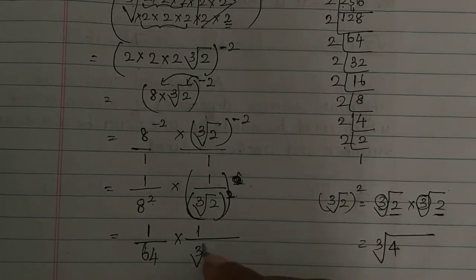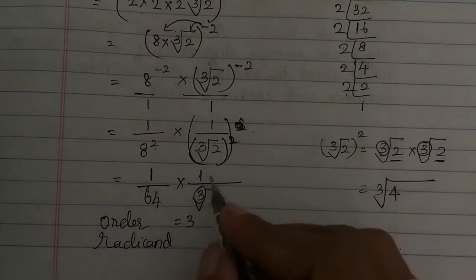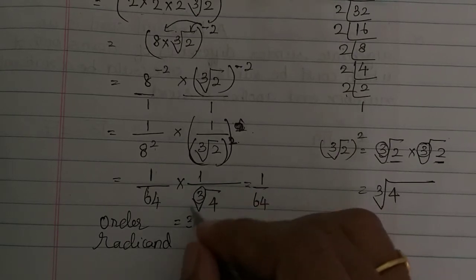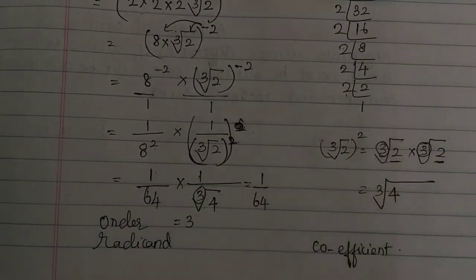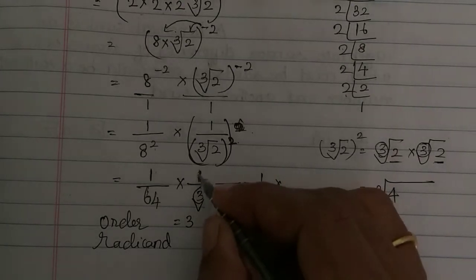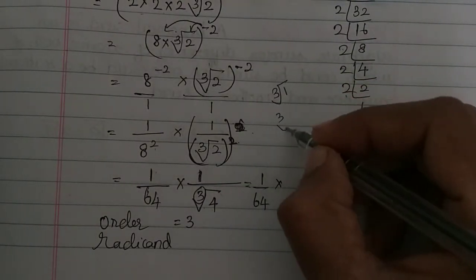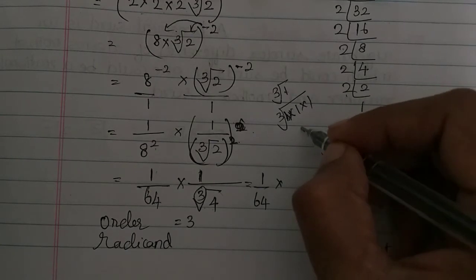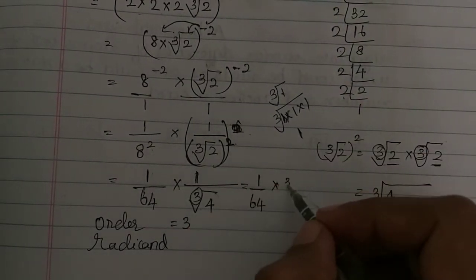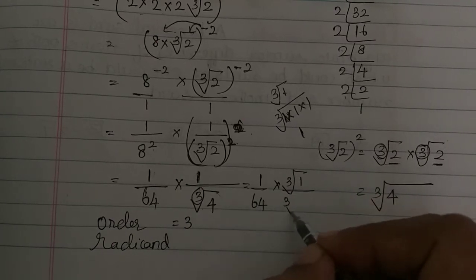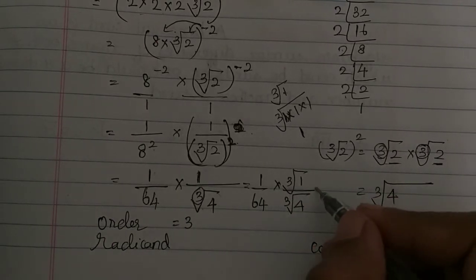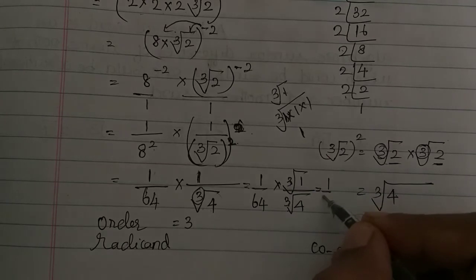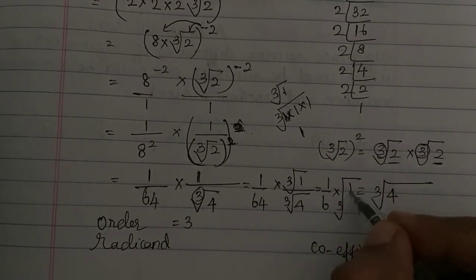So we have 1 by 64 × 1 by cube root of 4. Now the cube root of 1 is just 1. We can write this as 1 by 64 × cube root of 1 by cube root of 4, which equals 1 by 64 × cube root of 1 by 4.